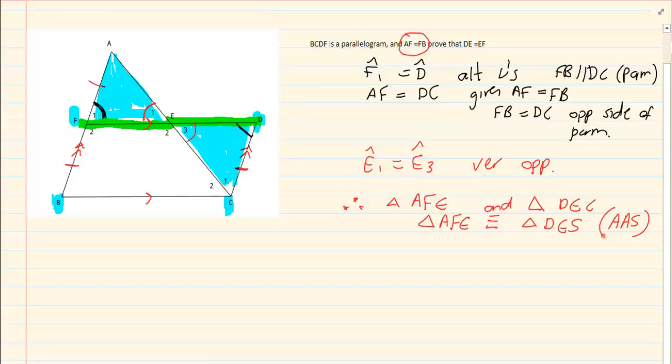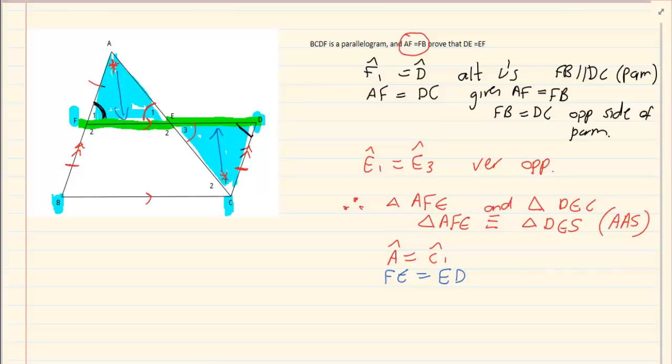Now, if they're congruent, remember, as soon as you can deduce they're congruent, then you can make the following deductions. That the remainder angles are equal and the remainder sides are equal. So you can tell me now that angle A is equal to angle C1. But if angle A is equal to angle C1, then also side FE is equal to side ED. That is another form of rider that they can give you. Thank you for watching.